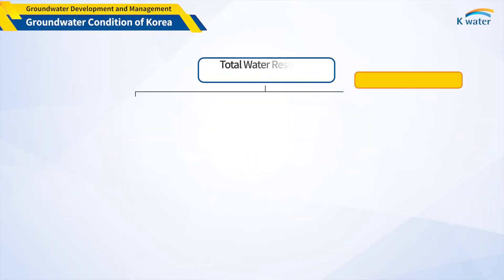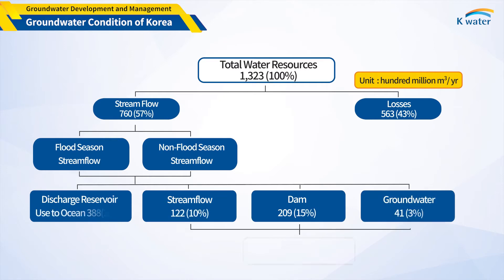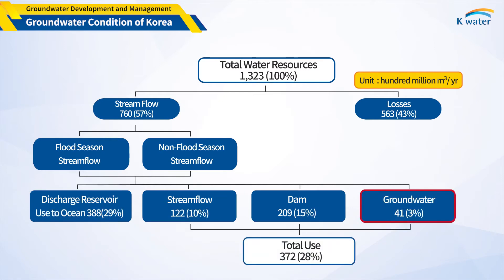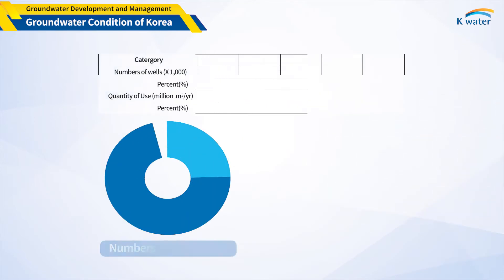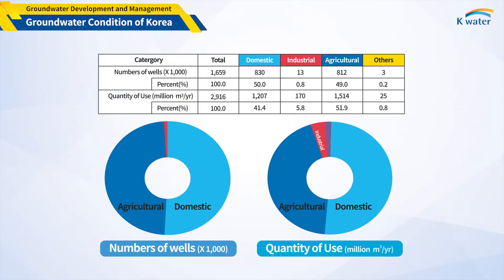Looking at the current status of water use in Korea, most water resources come from river or dam water. Groundwater accounts for about 3% of total water use, but a lot of groundwater is used in areas where water supply is not available and in rural areas for crop cultivation. According to statistics published in 2020, 1.65 million groundwater wells have been installed across the country, and about 2.9 billion cubic meters of groundwater is used annually.